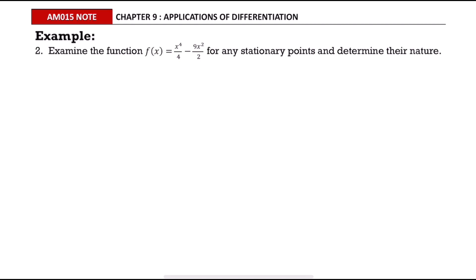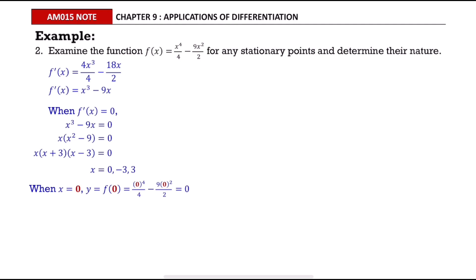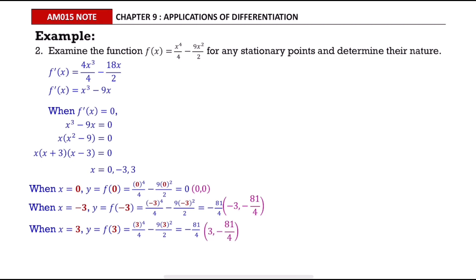In this example, we want to find stationary points and determine their nature. The first thing to do is find the first derivative of the function, f prime of x, then simplify it. After that, equate it to 0, factorize, and solve for x. There are three values of x, so there will be three stationary points. We substitute all the x values into the function and state the three stationary points.